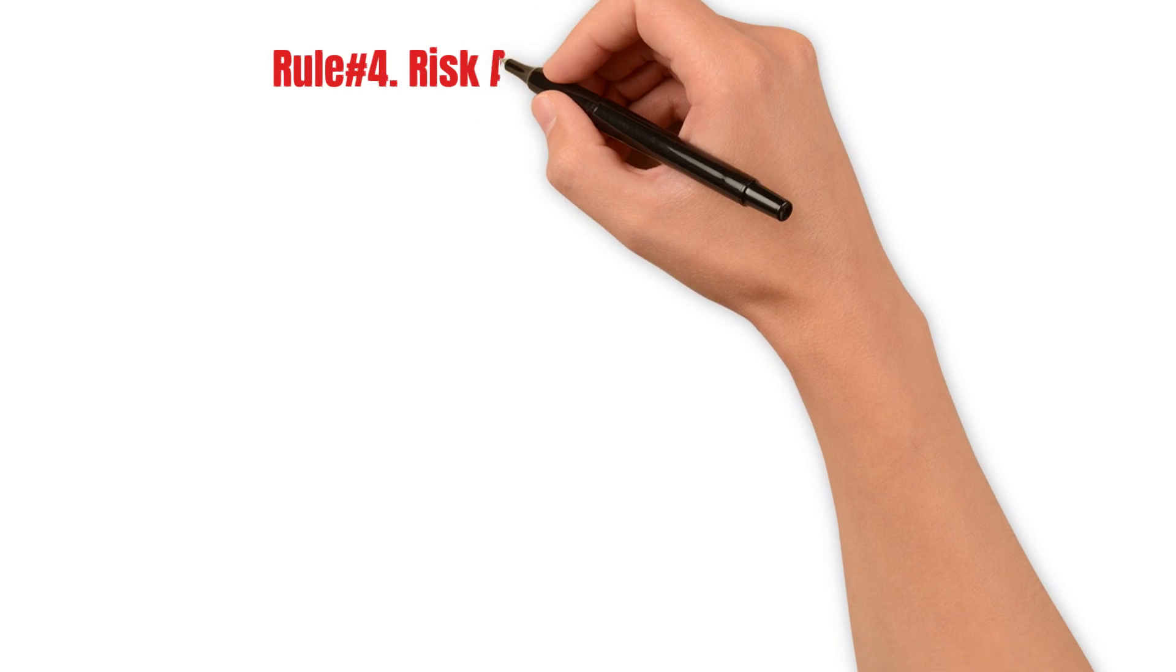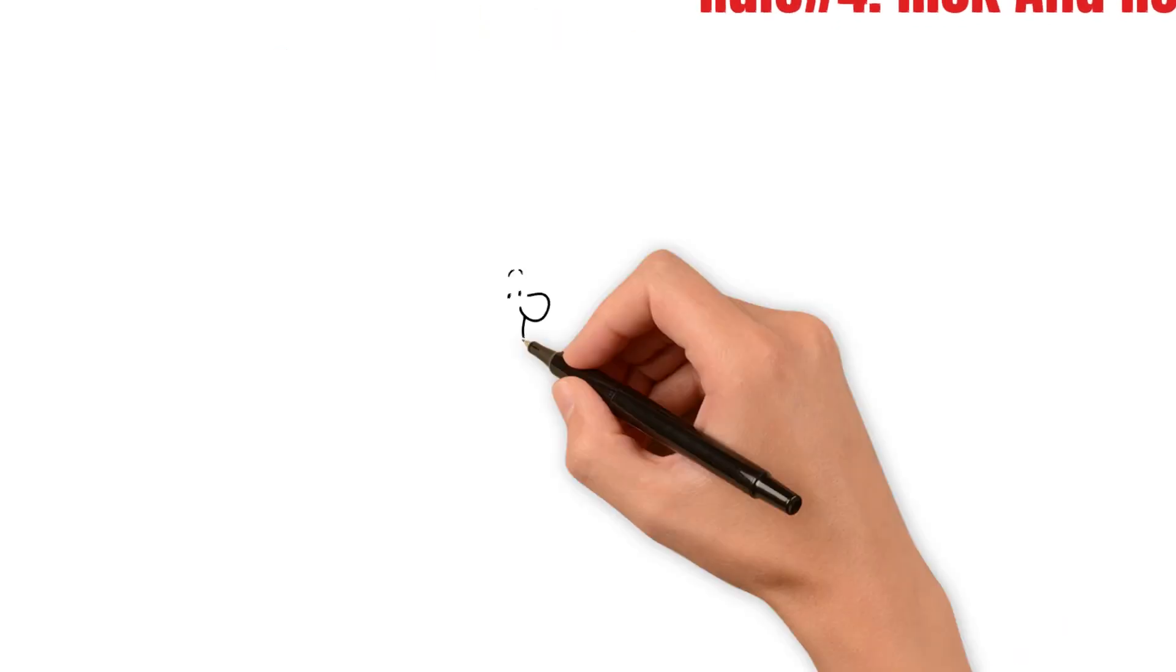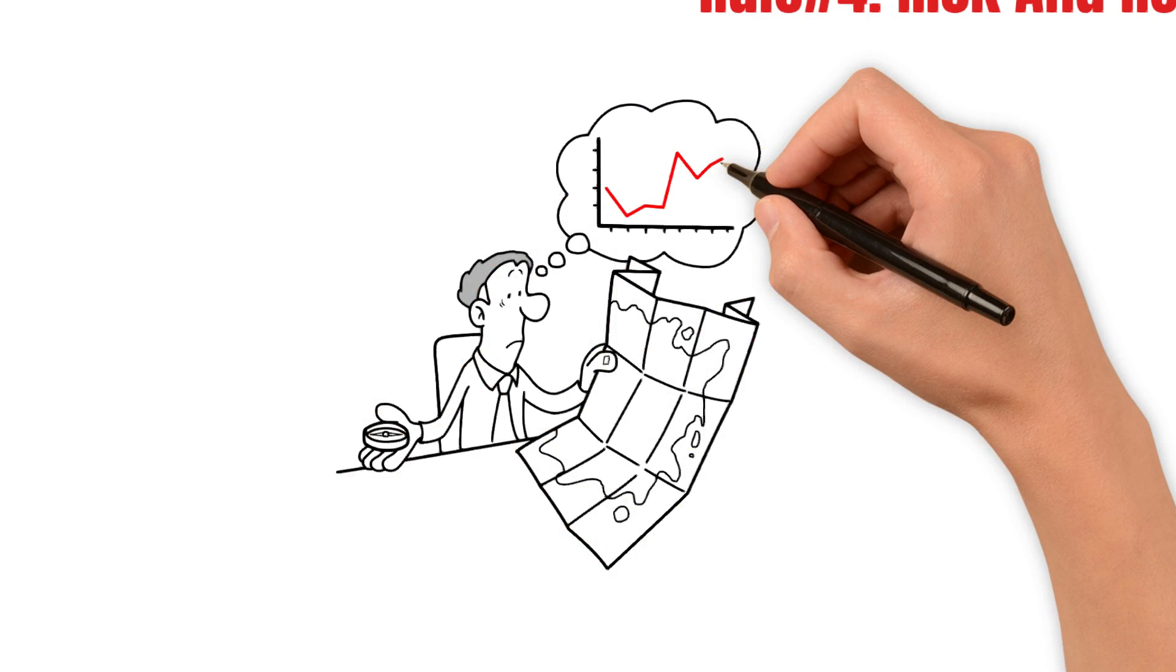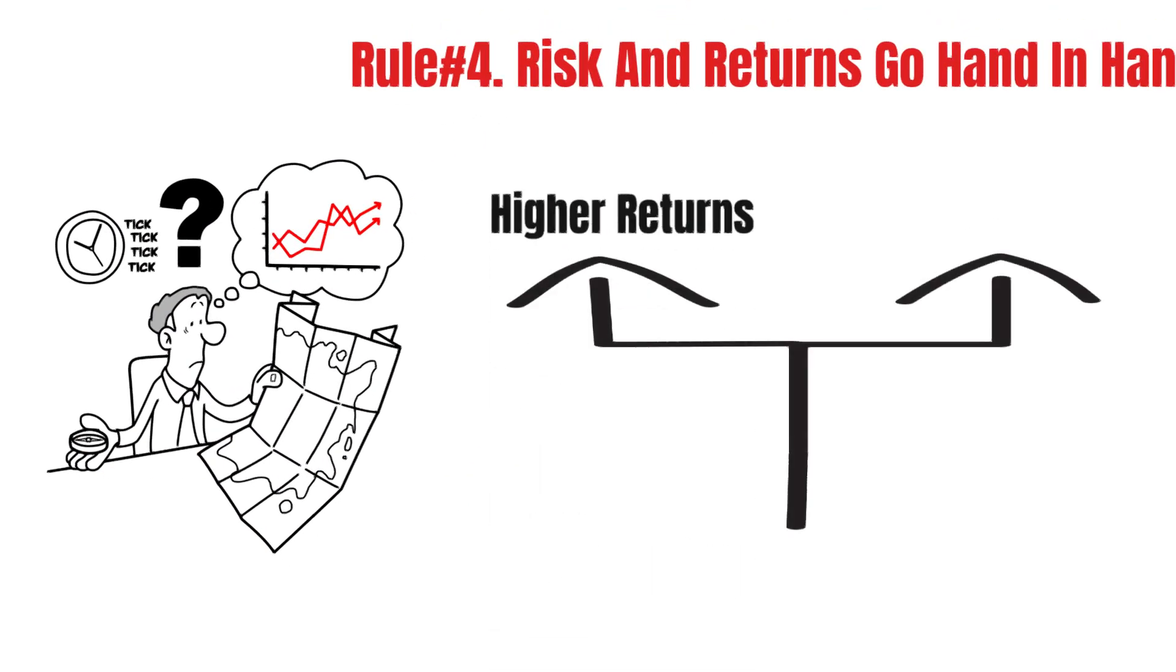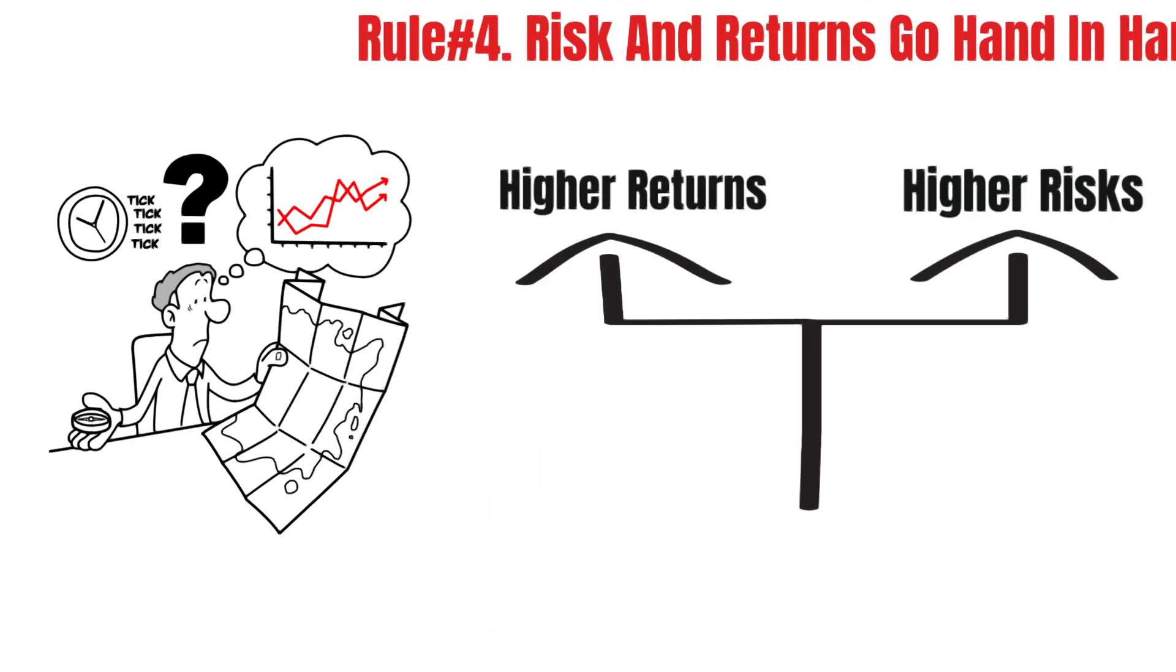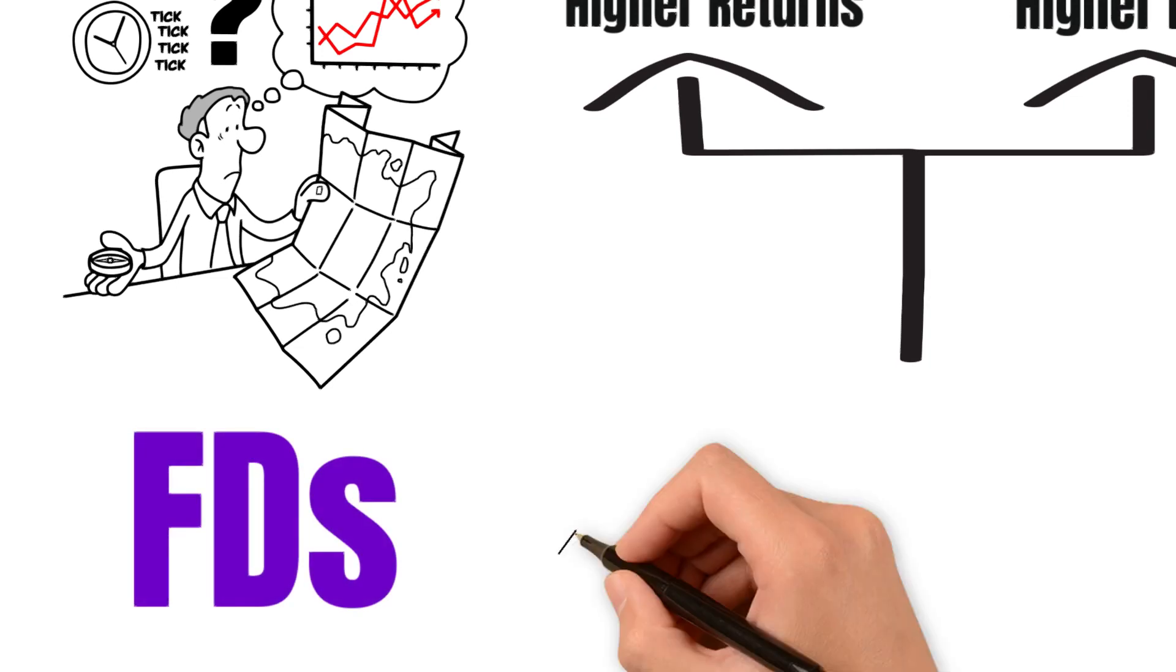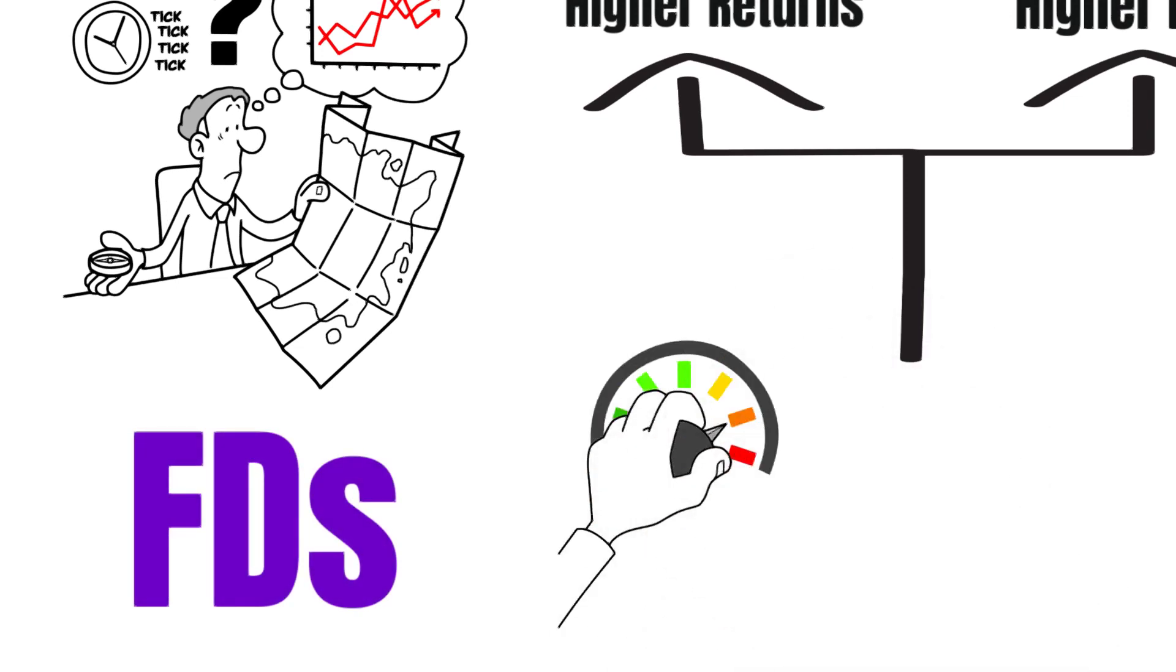Rule number four: Risk and returns go hand in hand. The trade-off between risk and return is pretty straightforward. With higher returns come higher risks. While investments like FDs carry minimal risk, the post-tax returns barely beat inflation.